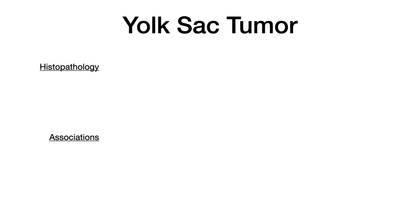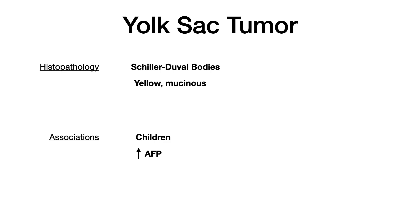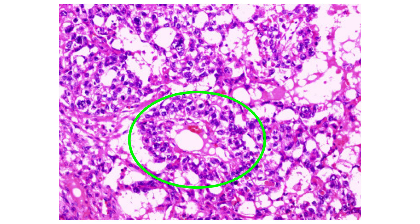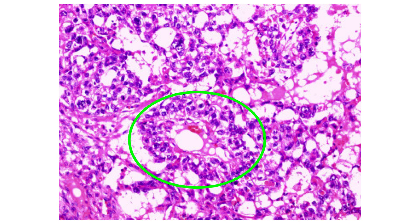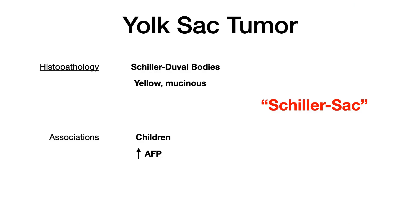For yolk sac tumors, the very high-yield finding is Schiller-Duval bodies. Grossly these look yellow and mucinous, and Schiller-Duval bodies are said to be glomerular in appearance — the histology looks like you're looking at a kidney. My mnemonic: 'Schiller-Sack' — Schiller from Schiller-Duval, Sac from yolk sac. It looks like a glomerulus but it's a Schiller-Sack. Scientifically incorrect, but it gets the test question right.